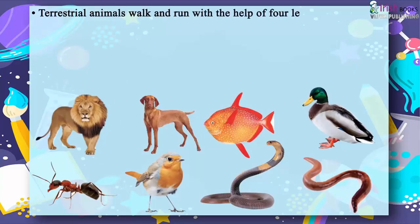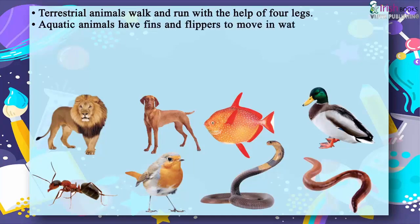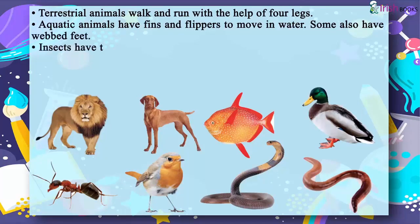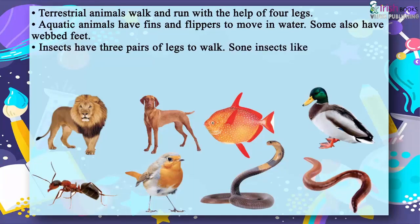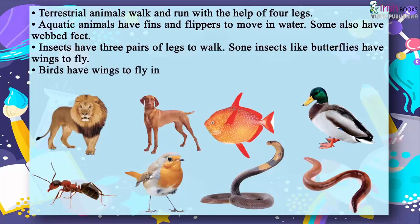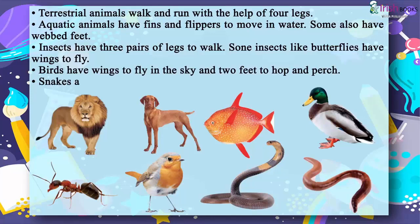Aquatic animals have fins and flippers to move in water. Some also have webbed feet. Insects have three pairs of legs to walk. Some insects like butterflies have wings to fly. Birds have wings to fly in the sky and two feet to hop and perch. Snakes and worms crawl on the ground.